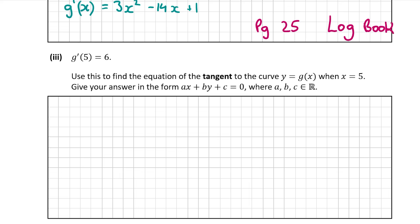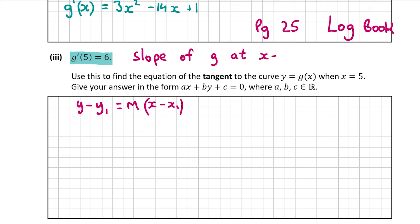The formula for the equation of a line is y minus y1 equals m times x minus x1, and we can use this since a tangent is just a line. You need three things: m, x1, and y1. m is the slope — not the midpoint, which is a common mix-up. x1 and y1 are a coordinate on the line. The first derivative of g of 5 equals 6, and the first derivative of a function is the slope of the function at that point.